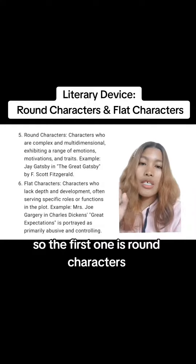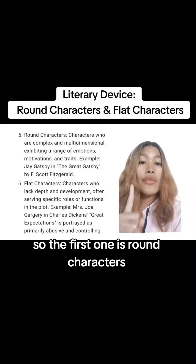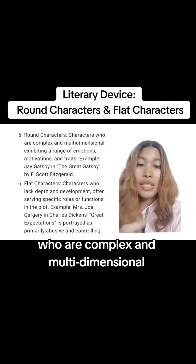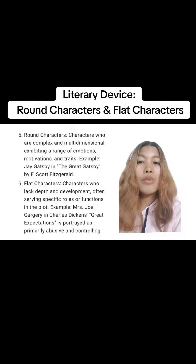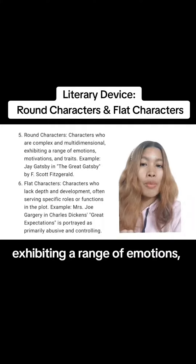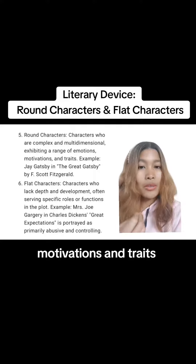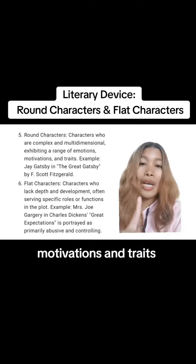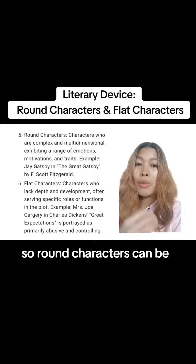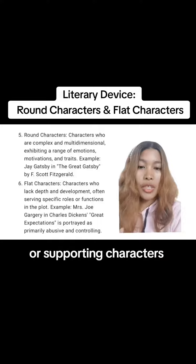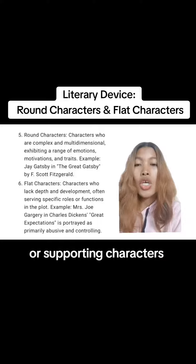So the first one is round characters. These are characters who are complex and multi-dimensional, exhibiting a range of emotions, motivations, and traits. Round characters can be protagonists, antagonists, or supporting characters.